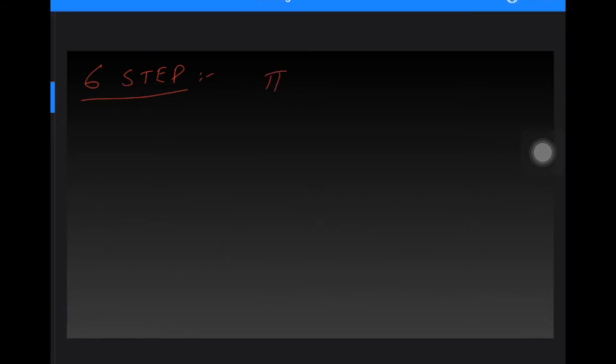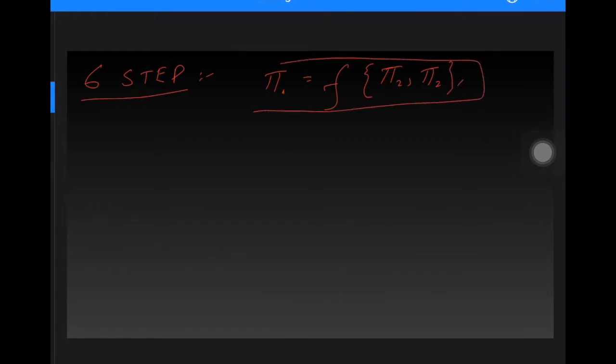We need to determine the relationships of pi, which is the dependent variable, as a function of other pi's which are independent pi's. So how to determine this and what is the formula or value of pi.